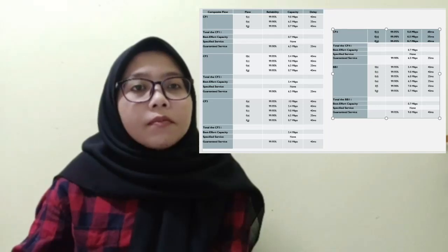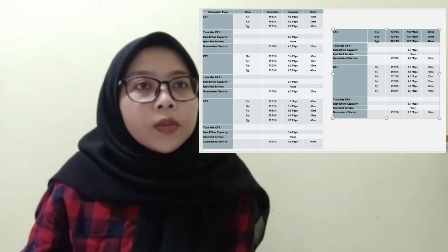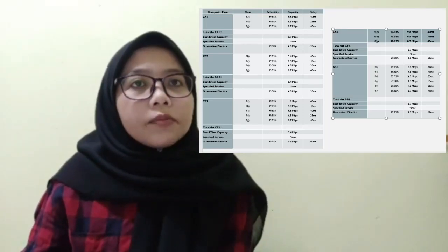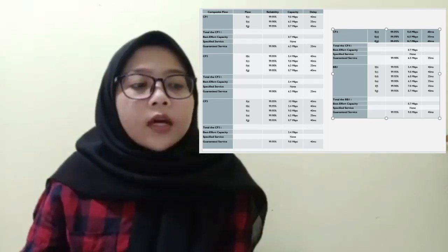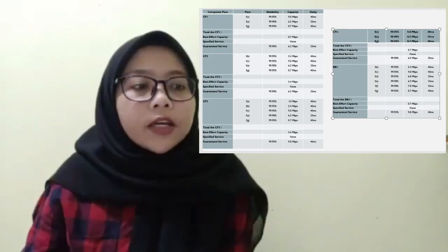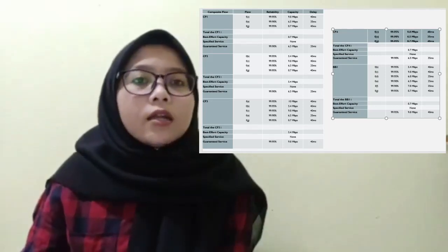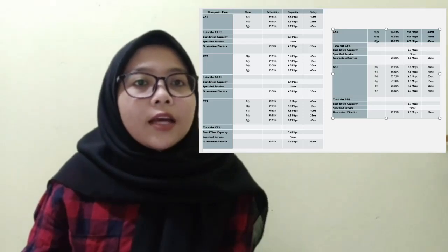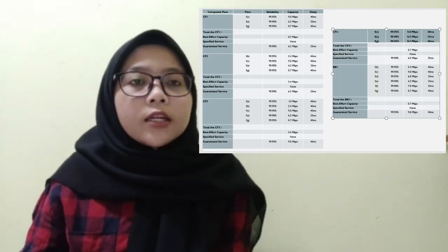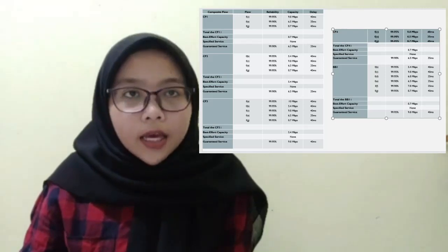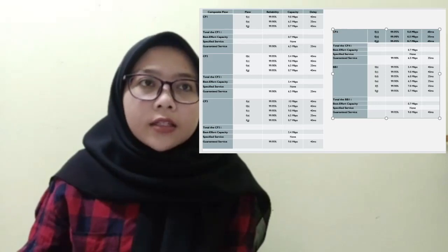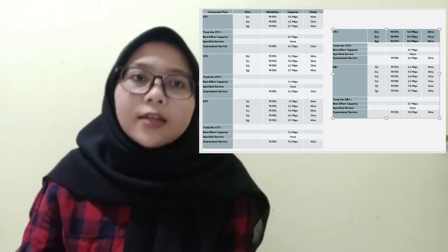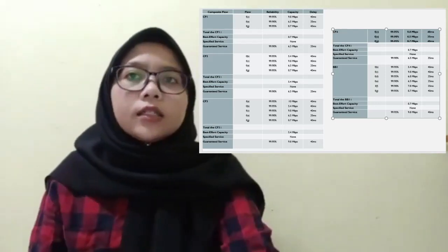For backbone flow BB1, the best-effort capacity is 5.5 Mbps, specified service 9, and guaranteed service with 99.98% reliability, 9.8 Mbps capacity, and a delay of 45ms.